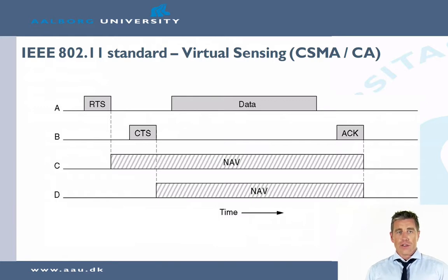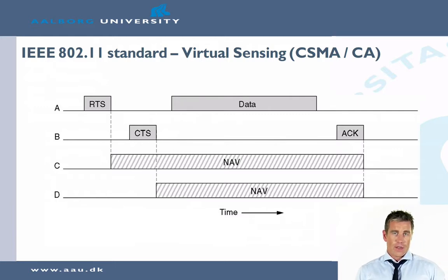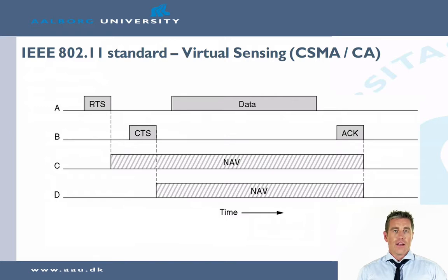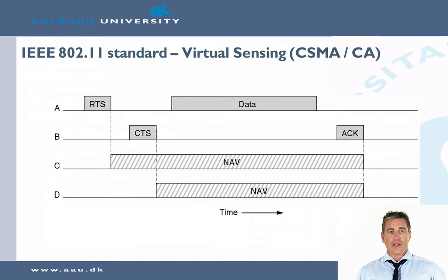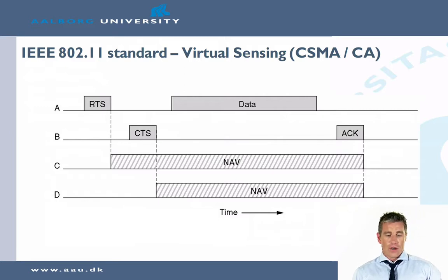The challenge, as we have also seen before, is that it might be that not everyone can hear A. Here we have node D, which obviously doesn't get the information from A. The good thing is that when the clear to send comes from B, D can hear this CTS and uses that for establishing the network allocation vector. The NAV is based on information in the RTS and CTS, which also indicates how long the channel will actually be needed.